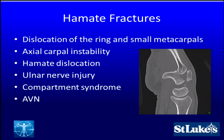Shear fractures of the hamate are typically associated with dislocations of the ring and small finger metacarpals. They create axial carpal instability — as you try to load the hand or create power grip, your metacarpals will sublux off the backside and collapse on themselves. You can have hamate dislocation, ulnar nerve injuries, compartment syndromes of the hand and hypothenar space, and avascular necrosis.